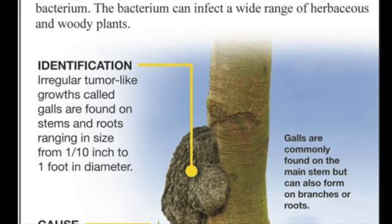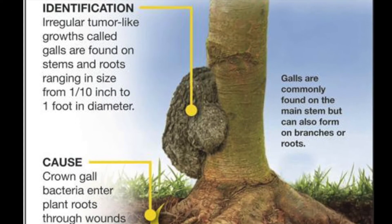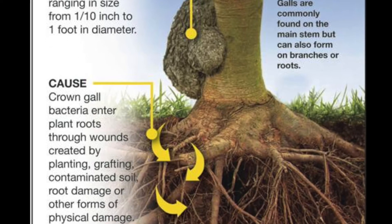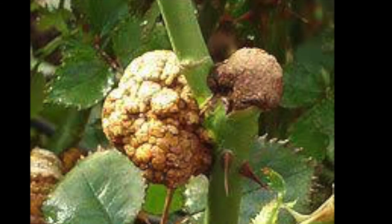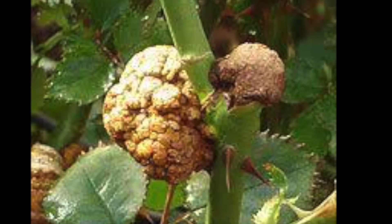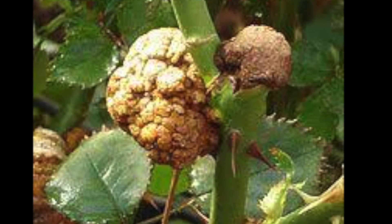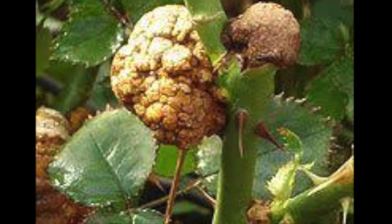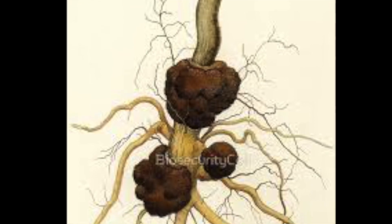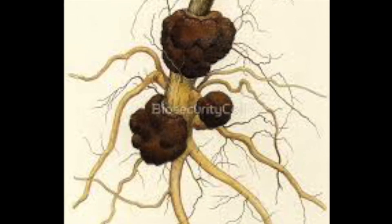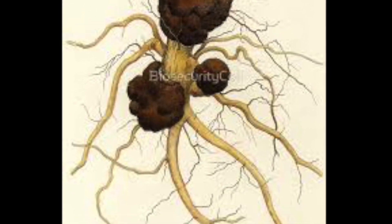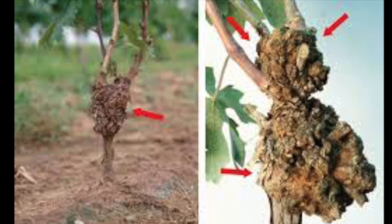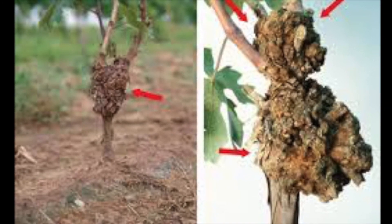Crown gall disease can usually be prevented by avoiding unnecessary wounding during the cultivation stages. Make sure you're using proper pruning and propagation tools so that wounding does not occur, as well as using careful sterilization and sanitation while planting the crops. Make sure you don't plant any already diseased plants.